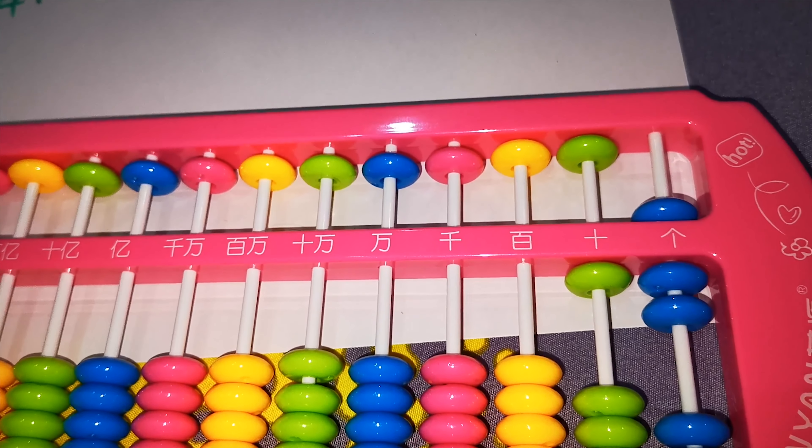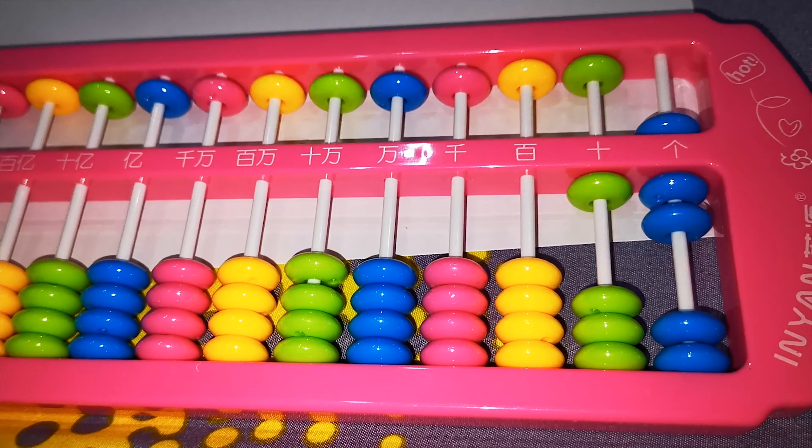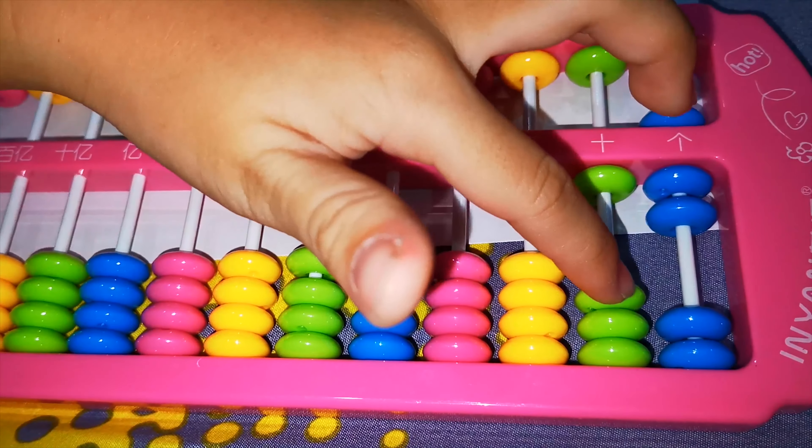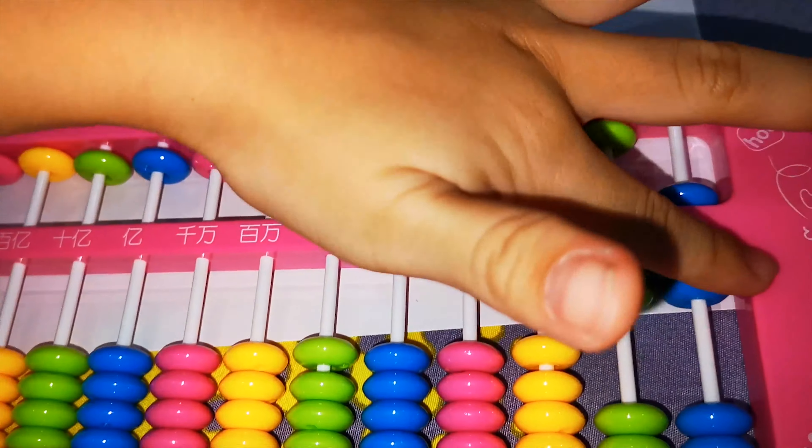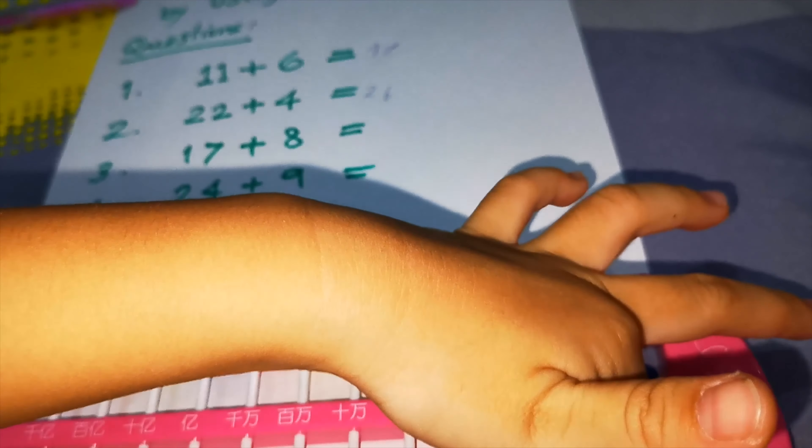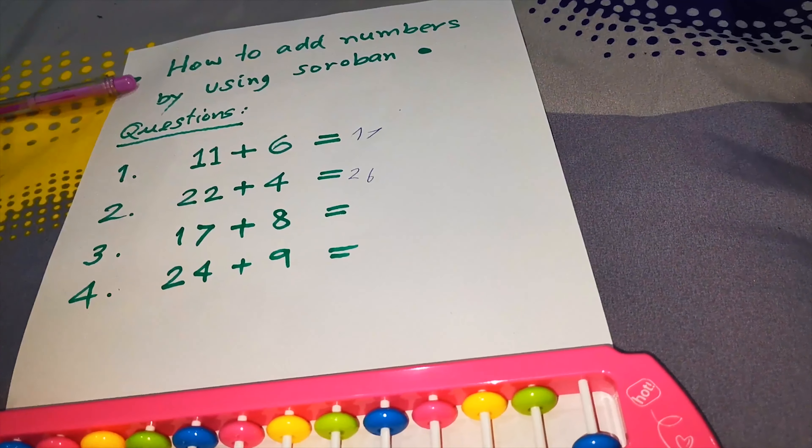8. 8. 8, how to do? Add 20. Add 10. Yeah, add 10. And subtract 1, subtract 2, subtract 2. Subtract 2 because 8 equals 10 subtract 2.